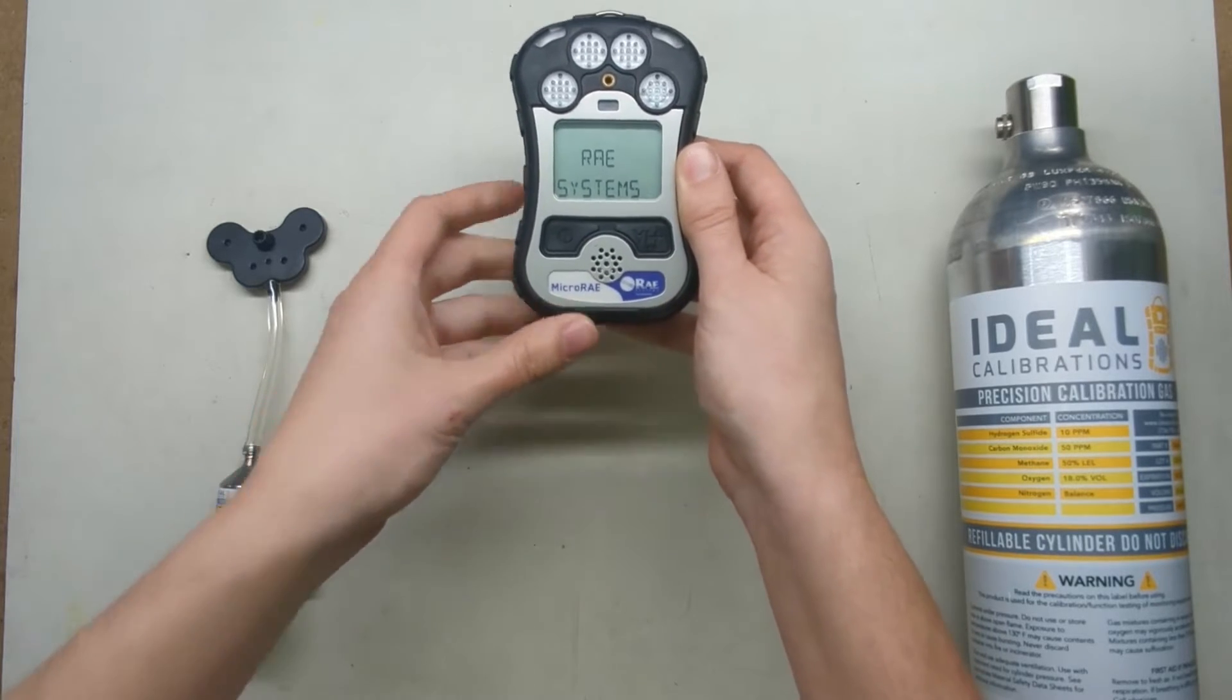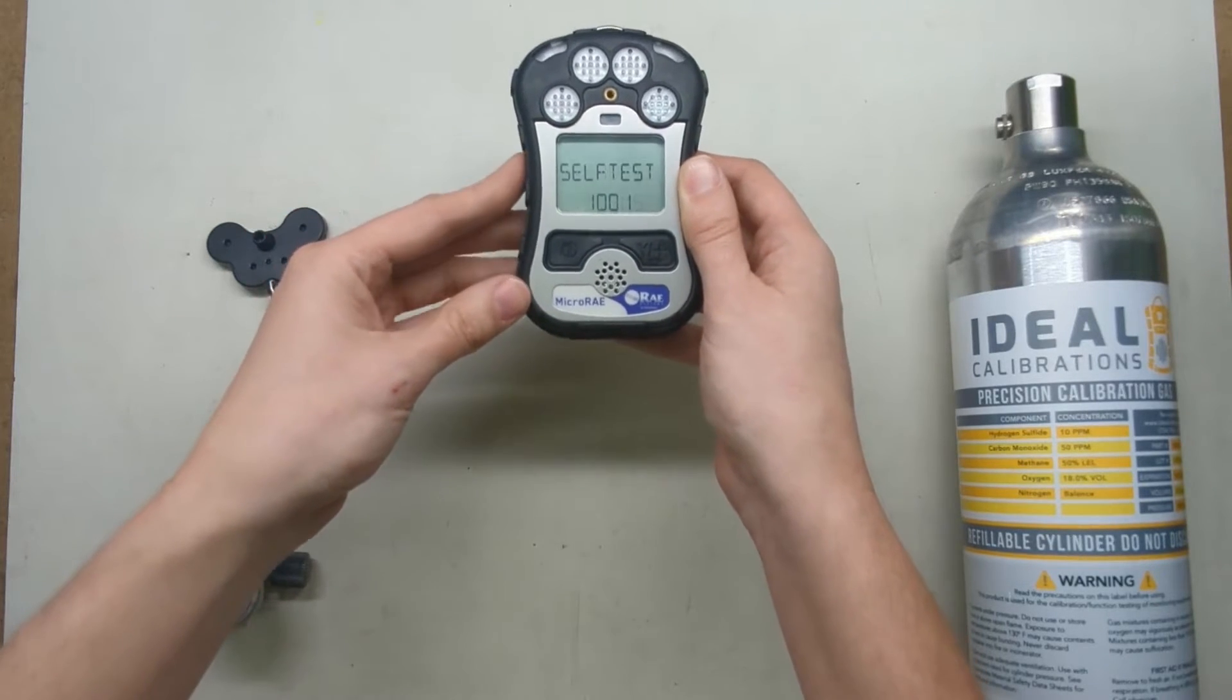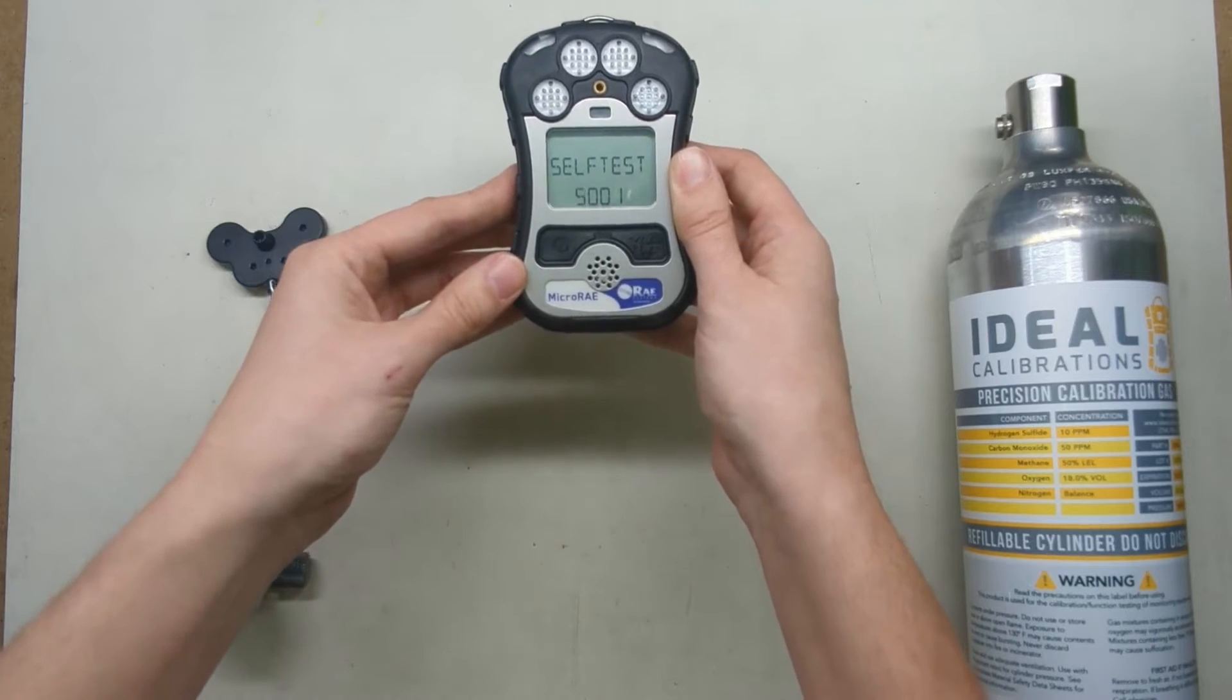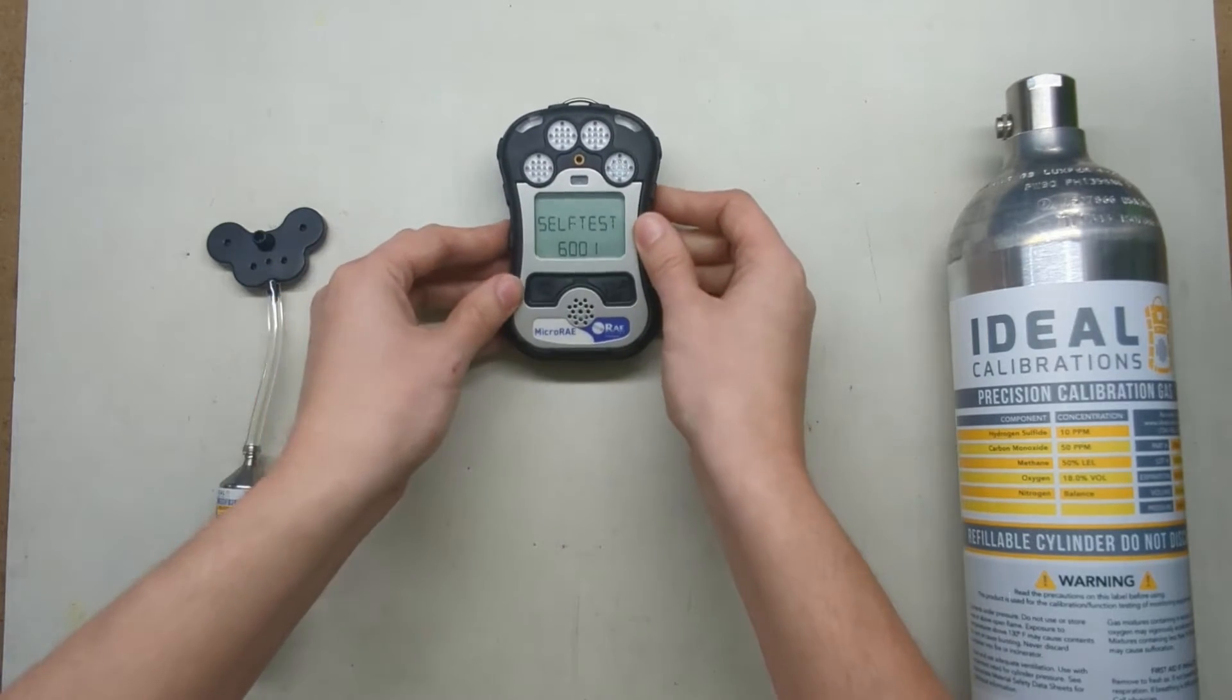While it's starting up, it's going to go through a number of display screens that'll tell you your alarm values like your TWA. It'll do a self-test, so let's let that go.